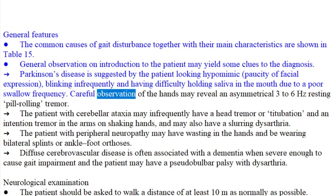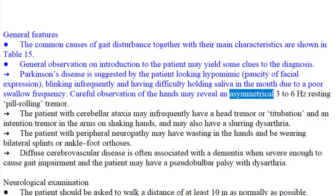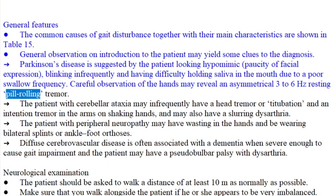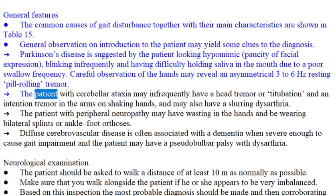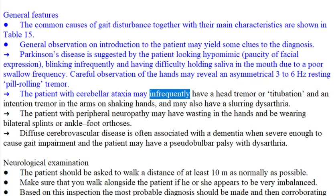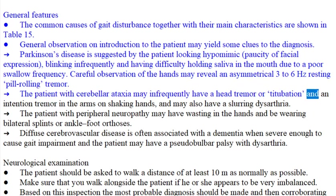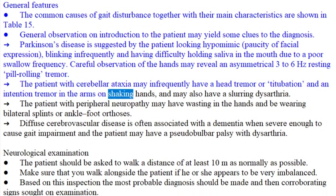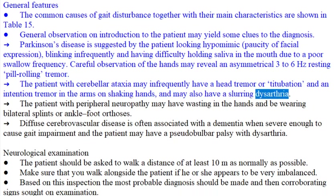Careful observation of the hands may reveal an asymmetrical 3–6 Hz resting pill-rolling tremor. The patient with cerebellar ataxia may infrequently have a head tremor or titubation and an intention tremor in the arms on shaking hands, and may also have a slurring dysarthria.